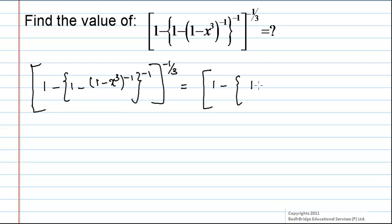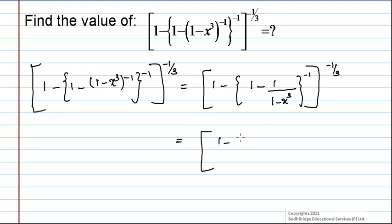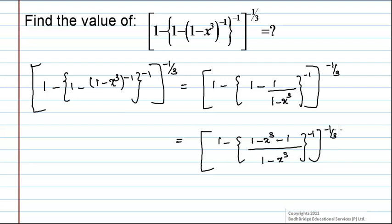This is equal to 1 minus 1 minus 1 by 1 minus x cube, the whole power minus 1, the whole power minus 1 by 3. Which is equal to 1 minus of 1 minus x cube minus 1 divided by 1 minus x cube, the whole power minus 1, the whole power minus 1 by 3. On simplifying, we get 1 minus of minus x cube divided by 1 minus x cube, the whole power minus 1.